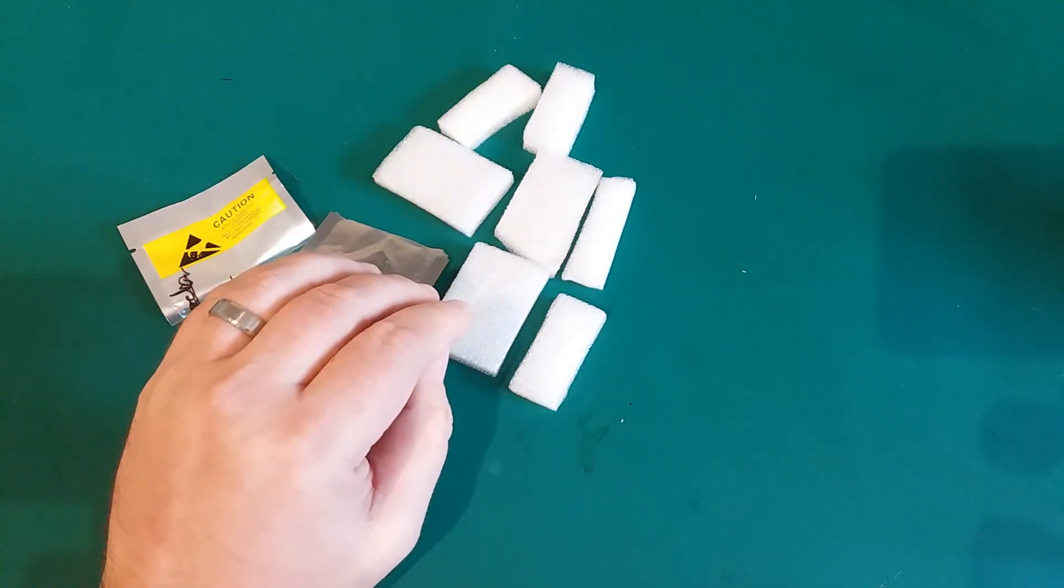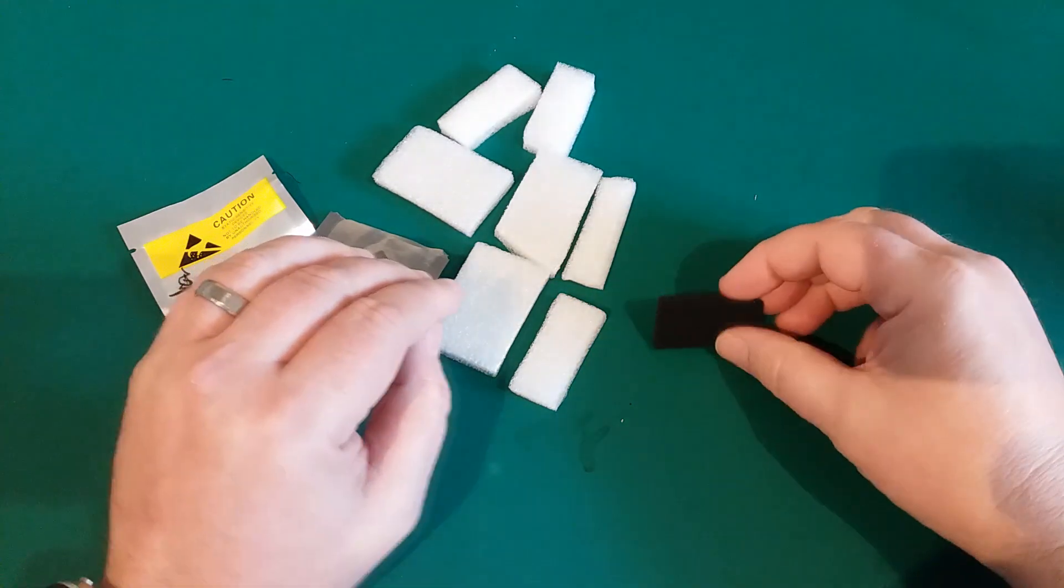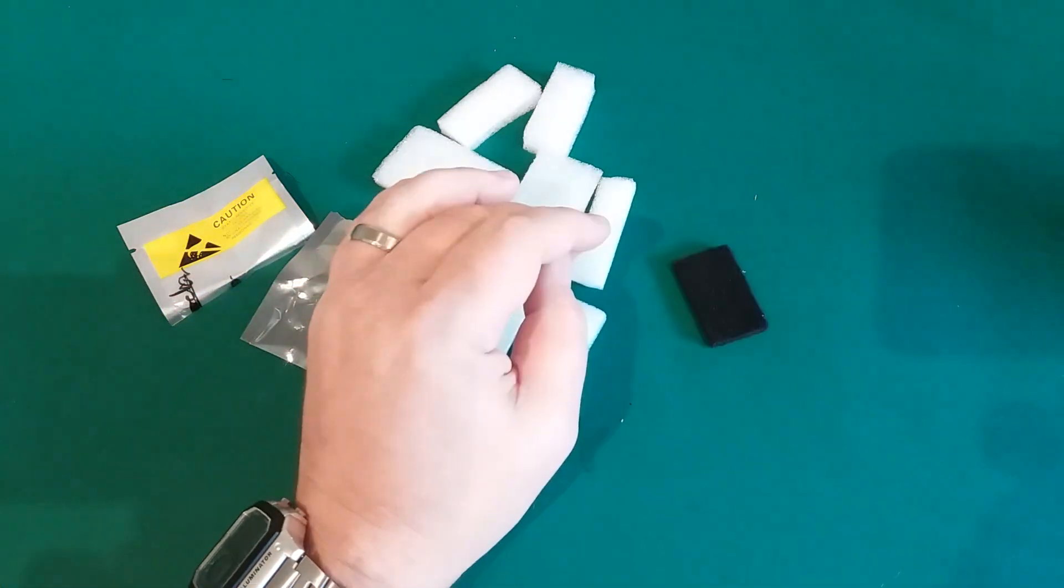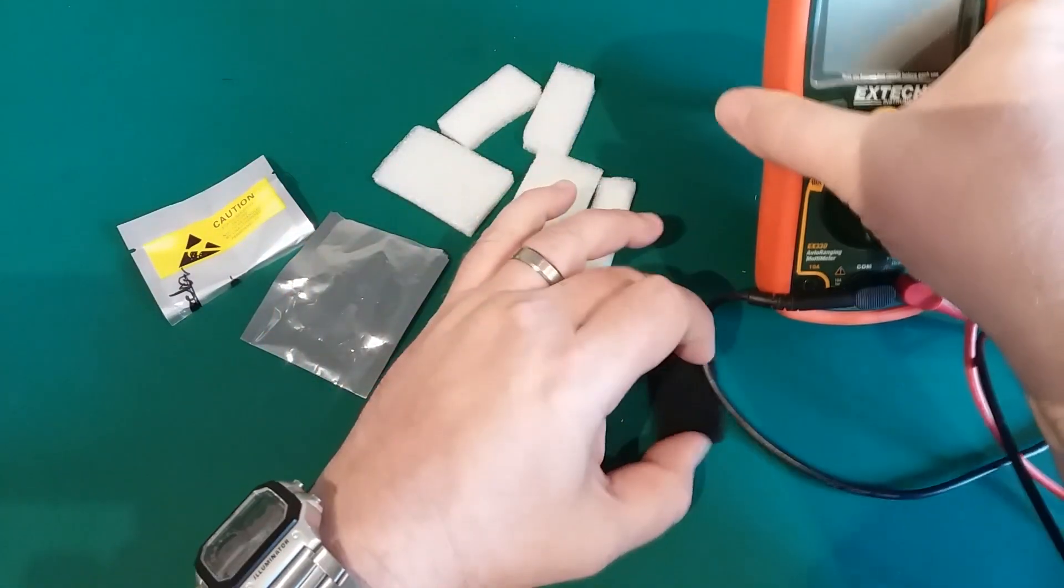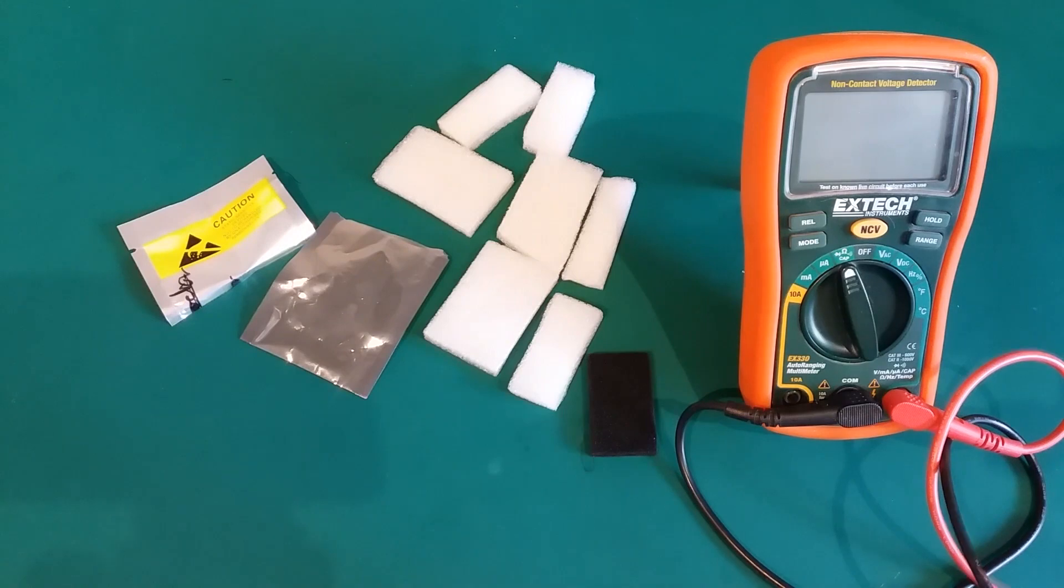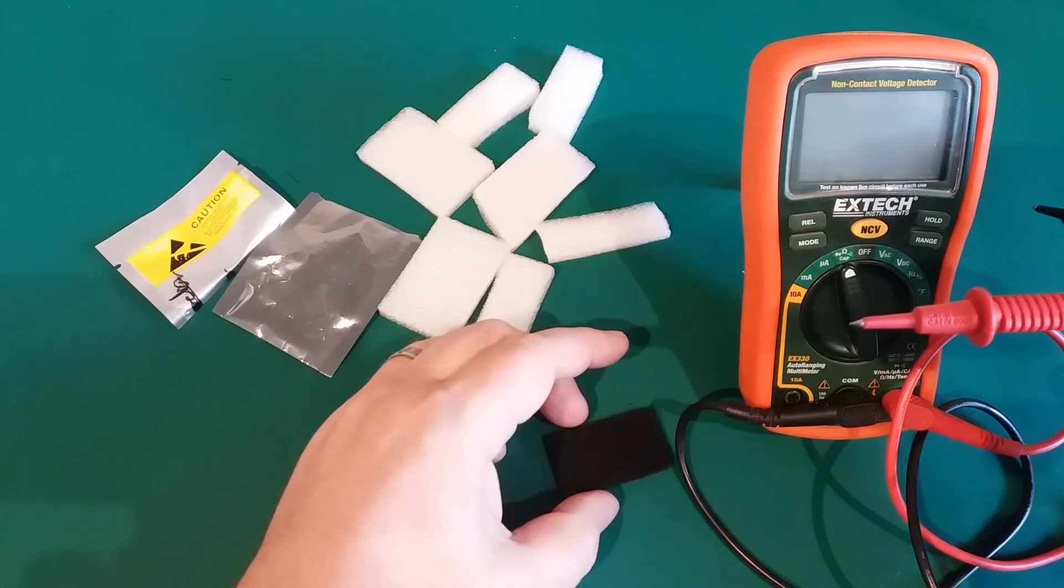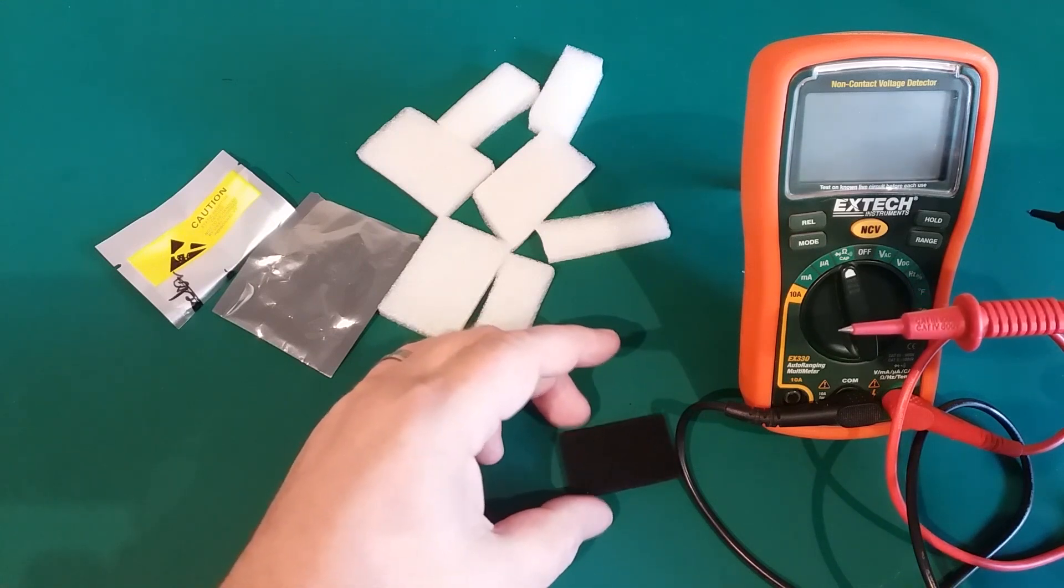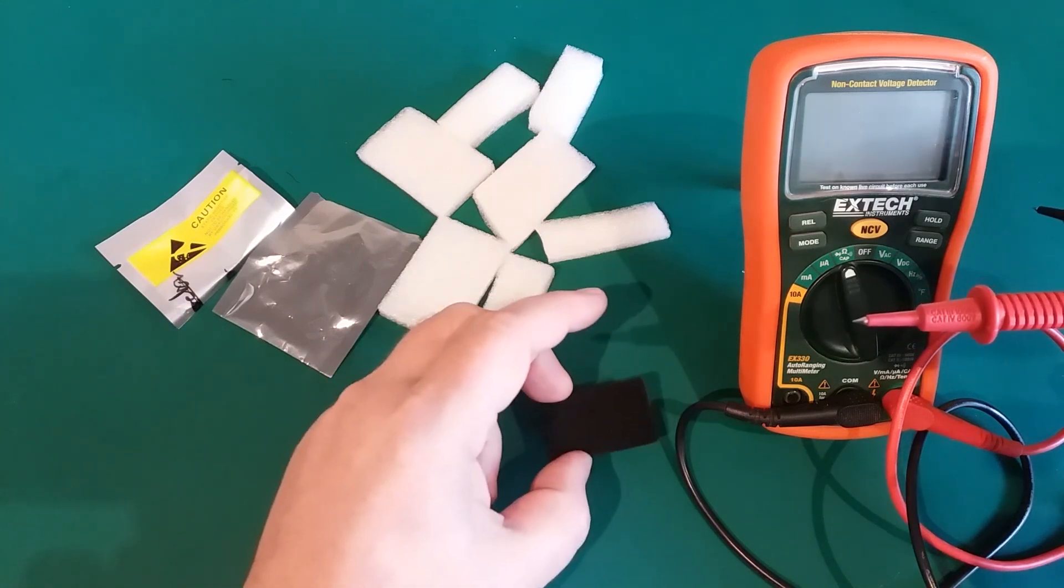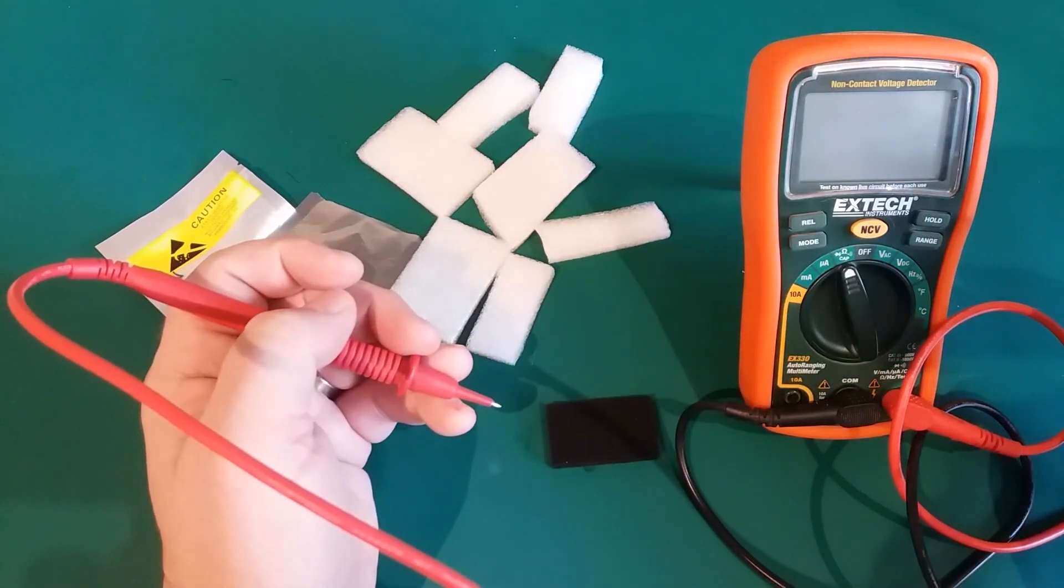Here's some actual proper anti-static foam and we've got the multimeter here. As a general rule, anti-static packaging is roughly about several hundred thousand ohms to a megaohm or so per centimeter, a rough resistance you'll get off anti-static packaging.